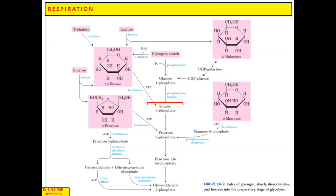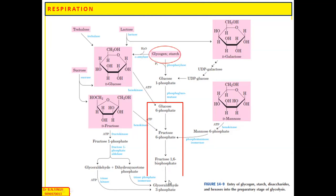Polysaccharides like glycogen and starch can enter glycolysis as intermediates. The key intermediates are glucose-6-phosphate and glucose-1-phosphate. Different polysaccharides, disaccharides, and monosaccharides enter glycolysis in the form of different intermediates.